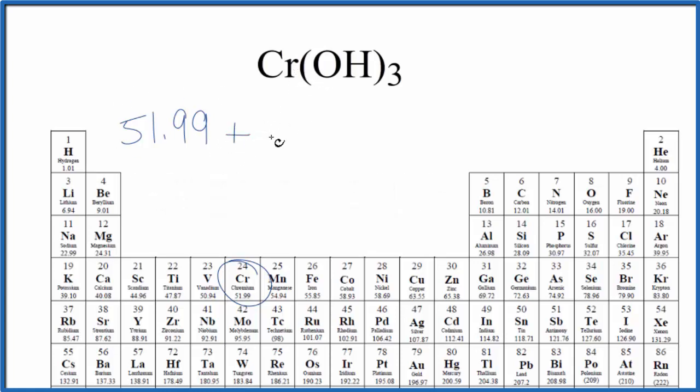Plus, let's just use our parentheses here. Oxygen is 16.00 grams per mole, and then hydrogen is 1.01 grams per mole.